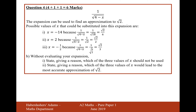Moving on to part b. There are parts bi and bii. The binomial expansion of 1 over root(4 minus x) can be used to approximate root 2. Three possible values of x are: x = minus 14 (giving root 2 over 6), x = 2 (giving root 2 over 2), and x = minus a half (giving root 2 over 3). Without evaluating the expansion, state giving a reason which of these three values of x should not be used.